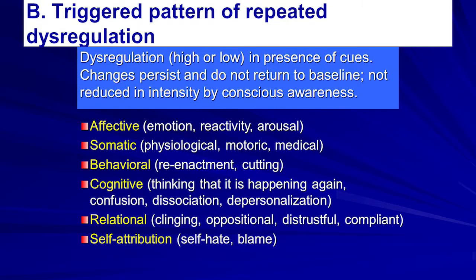This is a non-conscious neurological issue. It's going to affect the affective domain — emotion, reactivity, arousal — and the somatic or body domain, including physiological, motoric, and medical issues. These individuals are going to have some level of dysfunction manifested in various vulnerabilities to medical problems — essentially an overblown stress reaction. This kind of continued stress response does all kinds of harm to the immune system and sets up chronic pain and a number of other issues.